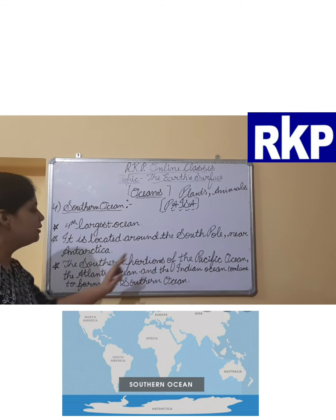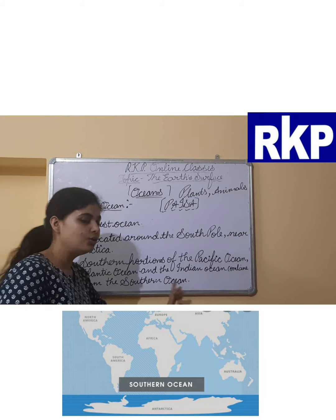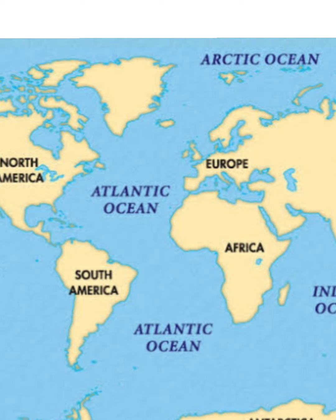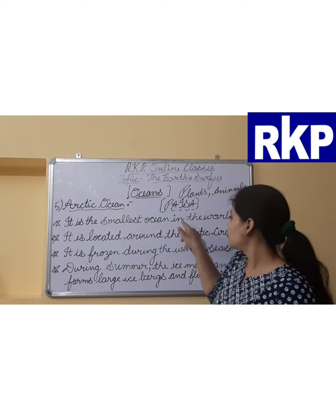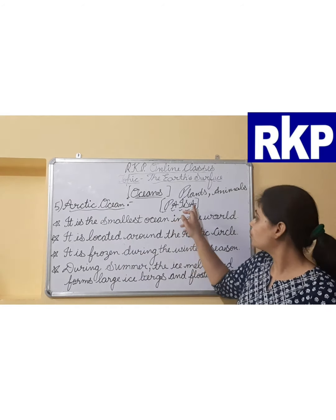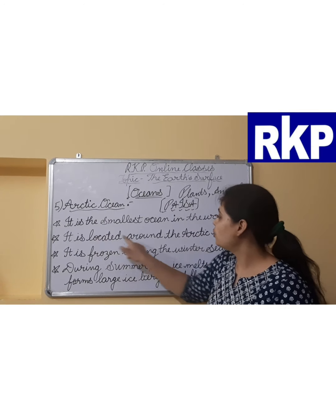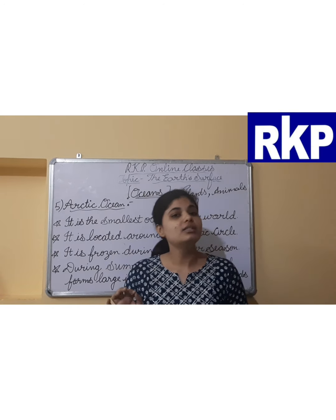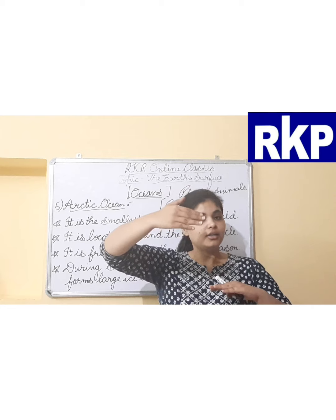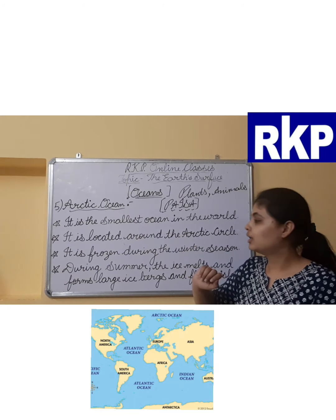The Southern Ocean is located near the South Pole, around the continent of Antarctica, as you can see in the picture. The southern portions of the Pacific Ocean, the Indian Ocean, and the Atlantic Ocean combine together to form the Southern Ocean. You can see the southern side of each of these three oceans merging to form it.